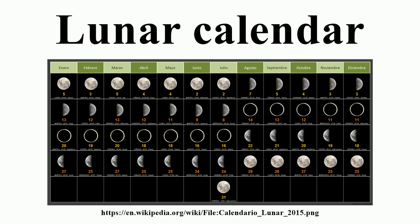A common purely lunar calendar is the Islamic calendar. A feature of the Islamic calendar is that a year is always 12 months. So the months are not linked with the seasons and drift each solar year by 11 to 12 days. It comes back to the position it had in relation to the solar year approximately every 33 Islamic years.